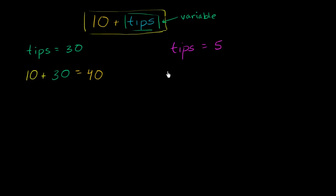Now I go back to this expression. The total I make is my hourly wage, plus the $5 in tips, which is equal to $15. As you see, this entire expression, the 10 plus tips, it changed depending on what the value of the variable tips is.